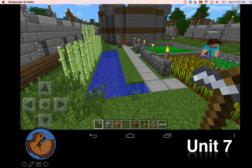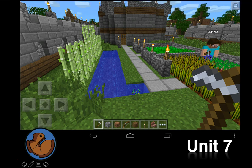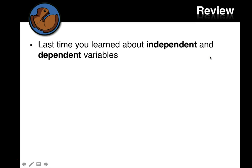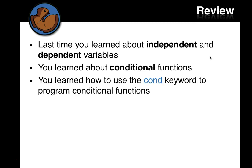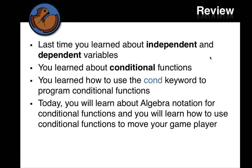Today we're going to continue with Unit 7. Last time you learned about independent and dependent variables, and you learned about conditional functions. You learned how to use the cond keyword to program conditional functions in Racket. Today we'll learn about algebra notation and how we talk about the same kind of ideas in algebra for conditional functions, and you'll learn how to use conditional functions to move your game player.